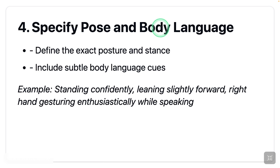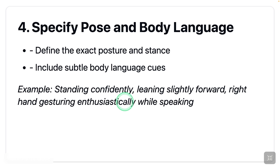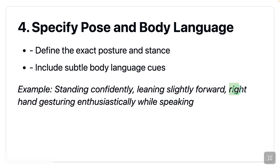Number four: specify pose and body language. Define the exact posture and stance, and include subtle body language cues. Here's an example: 'standing confidently, leaning slightly forward, right hand gesturing enthusiastically while speaking.' One thing I noticed is that sometimes you get multiple hands, so it's better not to mention anything about hands — better not to use 'right hand gesturing.'